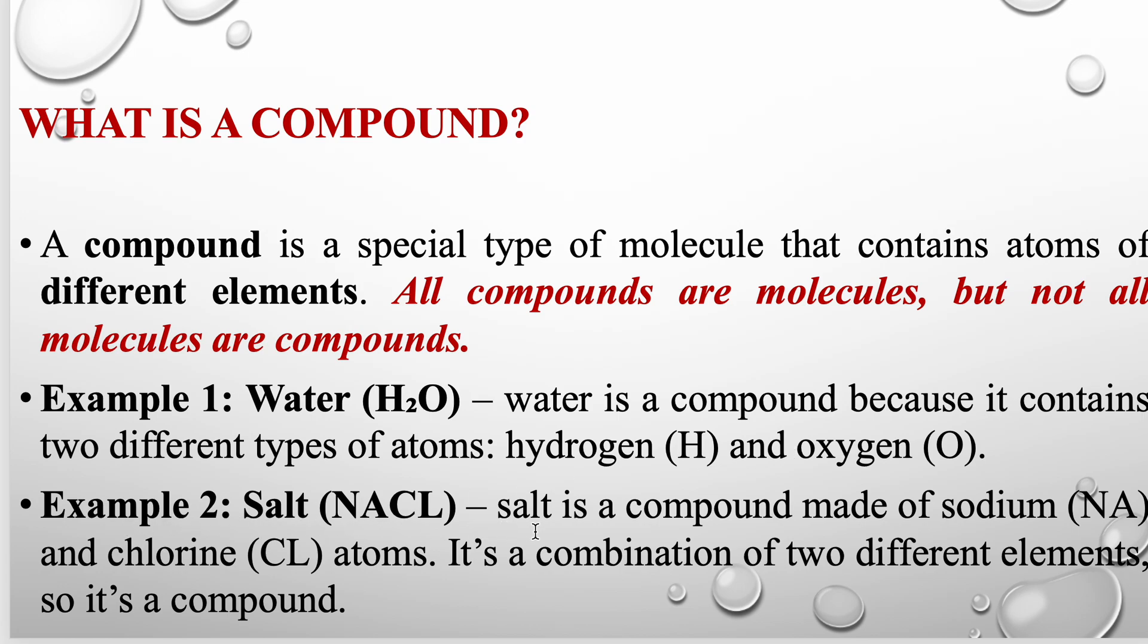Example 2: Salt NaCl. Salt is a compound made of sodium Na and chlorine Cl atoms. It's a combination of two different elements, so it's a compound.